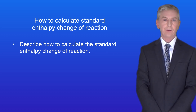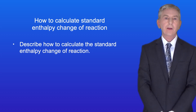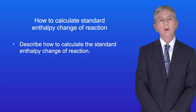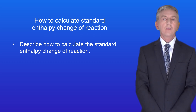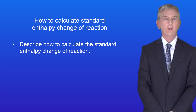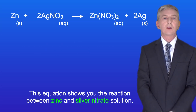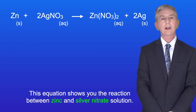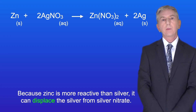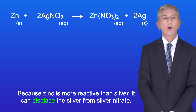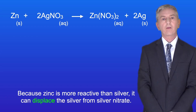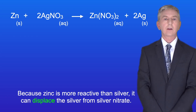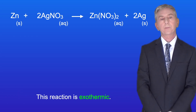Hi and welcome back to Free Science Lessons. In the last video we started looking at standard enthalpy change of reaction. In this video I'm going to give you a question to try yourself. This equation shows you the reaction between zinc and silver nitrate solution. Because zinc is more reactive than silver, it can displace the silver from silver nitrate, and this reaction is exothermic.